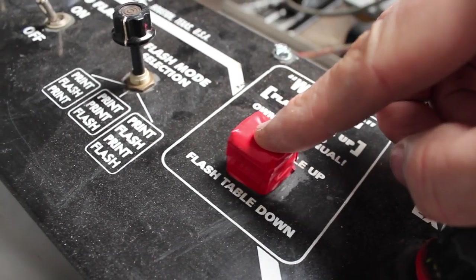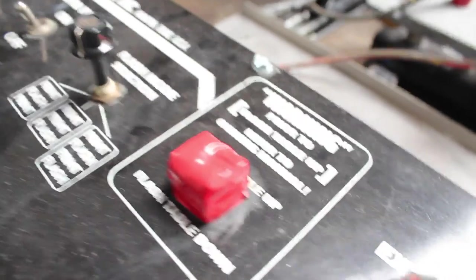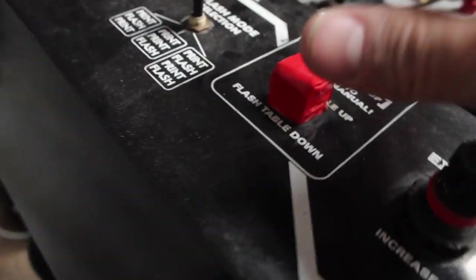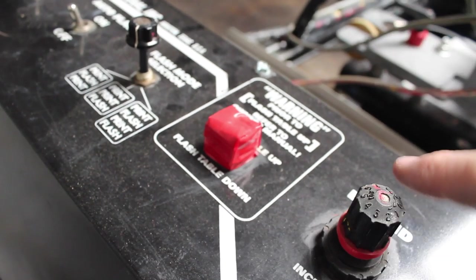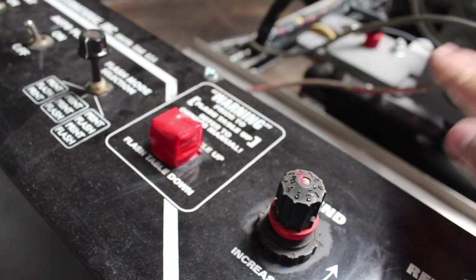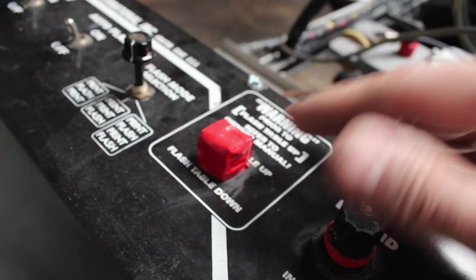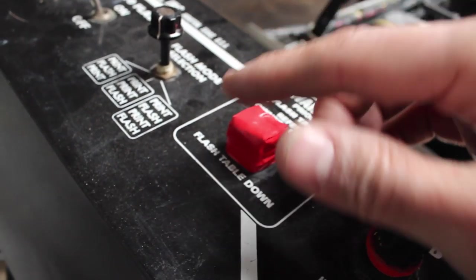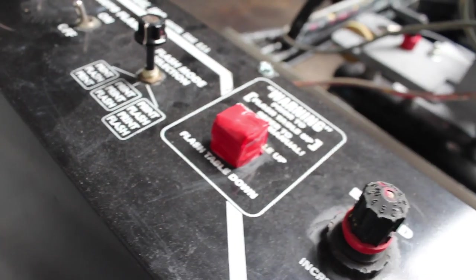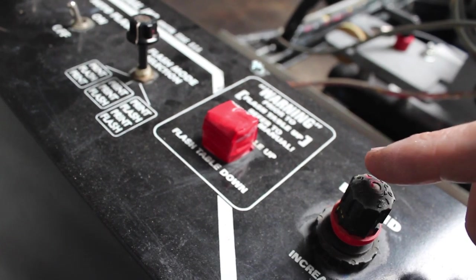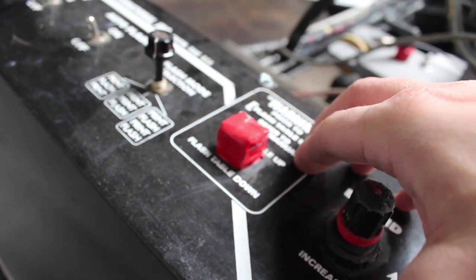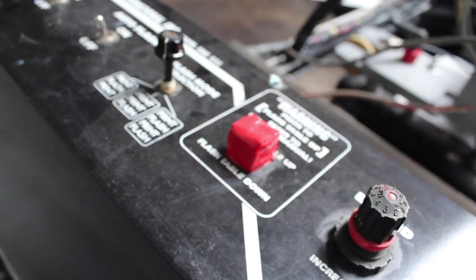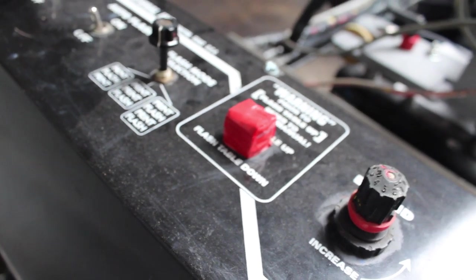Next thing we have is our table up switch here - table up, table down. It's got a couple settings. Ours is set to table up, so that way when the table is up the flash will come out and flash ink. With it on table down, it will actually flash while the table is down.